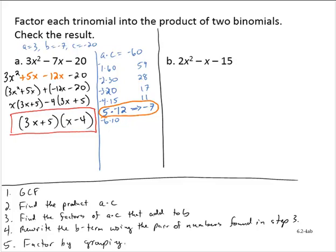Let's check with FOIL. 3x times x is 3x squared. Outers: 3x times negative 4 is negative 12x. Inners: positive 5 times x is plus 5x. Last: 5 times negative 4 is negative 20. Combining the like terms in the middle, we get 3x squared minus 7x minus 20, and that checks out.